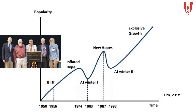The Dartmouth Summer Research Project on Artificial Intelligence was a 1956 summer workshop, widely considered to be the founding event of artificial intelligence as a field. This event was hosted by John McCarthy and Marvin Minsky.